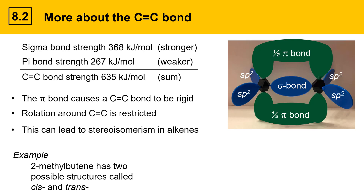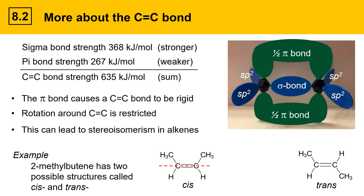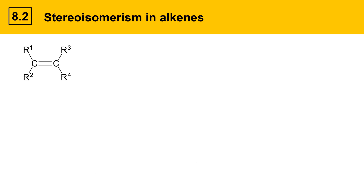Here's an example: 2-methylbutene has two possible structures called cis and trans. In the cis version, if you imagine a line bisecting the C=C double bond lengthwise, the two methyl groups are on the same side of that line — that's called cis. The other possibility is that the methyl groups are on opposite sides of that line, which is called trans. These molecules are inequivalent because it's not possible to rotate about the C=C double bond to make one into the other. These are a pair of stereoisomers.